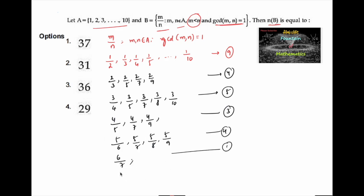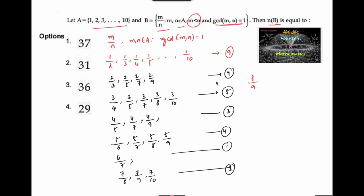Starting with 7: 7 upon 8, 7 upon 9, and 7 upon 10 are all valid, so 3 elements. Starting with 8: 8 upon 9 is valid, 8 upon 10 we cannot consider, so only 1 element.